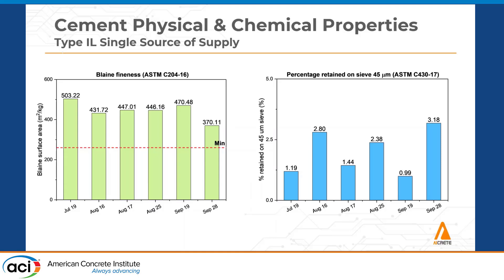A lot of questions have been towards Blaine. Obviously when you have some fineness, you have some assistance there with particle packing as well as strength, as well as filling some of those voids. But you can also see the variation here with the Blaine. This is with one type 1L — there was an issue with this specific producer and their plant. This would be something I would consider a very rare and not a common occurrence, we would hope.